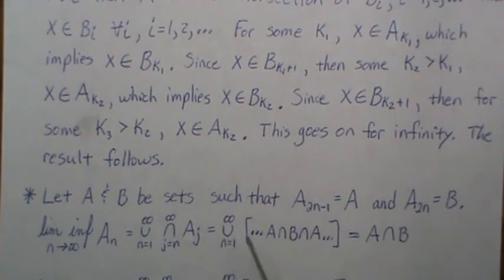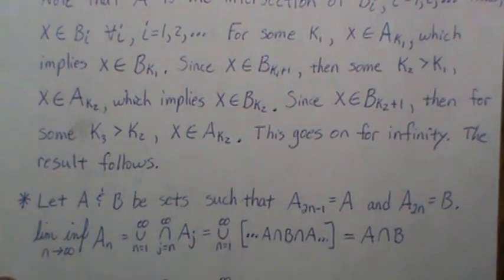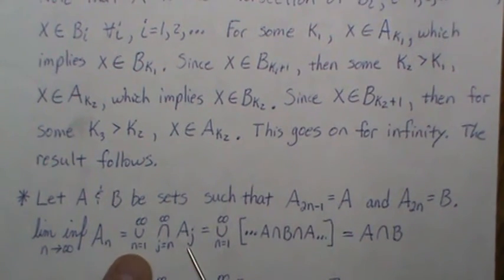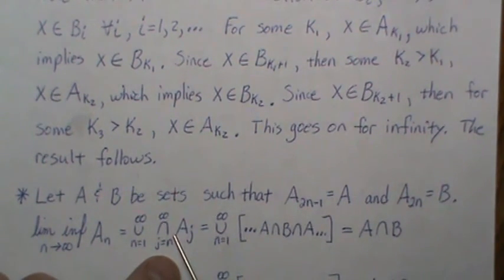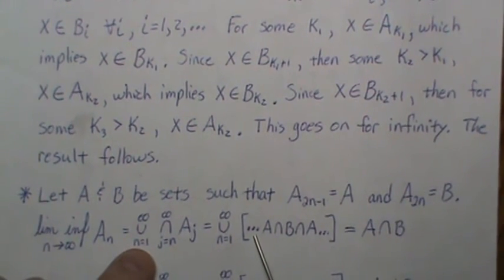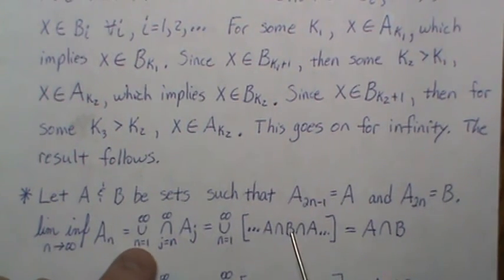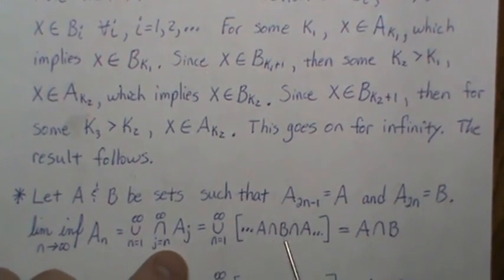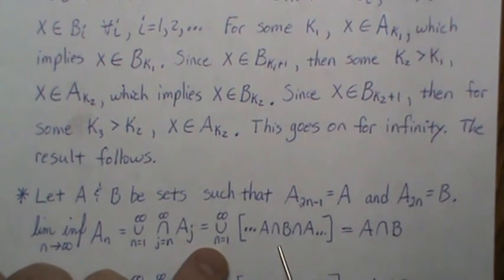Quick example: let A and B be sets such that A_{2n-1} = A and A_{2n} = B — so odd-indexed sets are A and even-indexed sets are B. The limit infimum of A_n by definition is the union of intersections. For each n, we intersect alternating A's and B's, always yielding A ∩ B. When we union infinitely many copies of A ∩ B, they're all the same, so the limit infimum is A ∩ B.